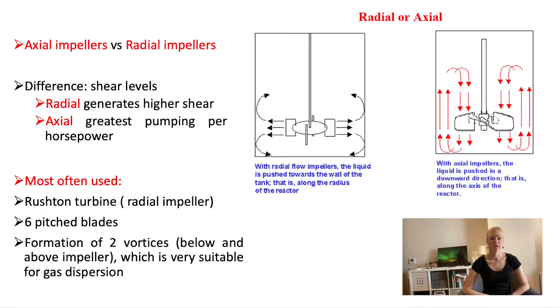Now the first thing that we need to discriminate between is between radial and axial impellers. So if we talk about radial impellers, that means that it goes along the radius of the tank. So you see the flow will go like this, so along the radius. Which will mean that if you have your impeller, you would have a vortex below the impeller and above it.